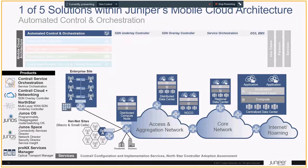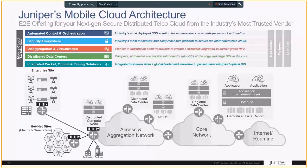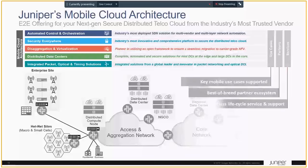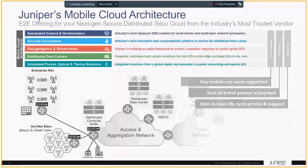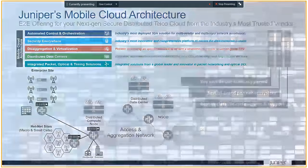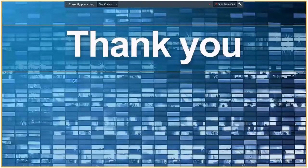Automated control and orchestration is one of the five solutions of Juniper's mobile cloud architecture. There are presentations on the other four solutions, and I urge you to take a look at those. All of this is geared towards the evolution and automation of mobile networks everywhere. When comparing this set of architectures to others, consider whether we support the key mobile use cases, our best-of-breed partner ecosystem, the top orchestrators available, and our best-in-class lifecycle support and services. Thank you for your time and attention, and I hope you'll continue to talk to Juniper about automating your network.